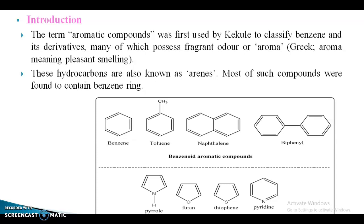The term aromatic compounds was first used by Cooley to classify benzene and its derivatives, many of which possess a fragrant, that is pleasant, smell. These hydrocarbons are also known as arenes. Most of such compounds were found to contain benzene.